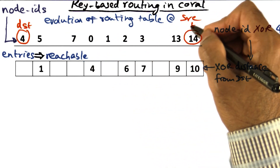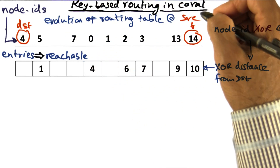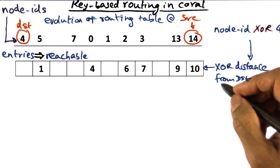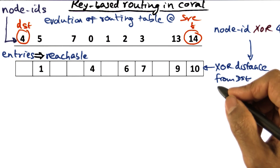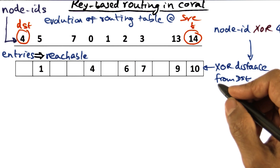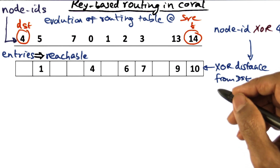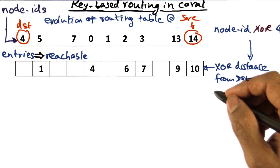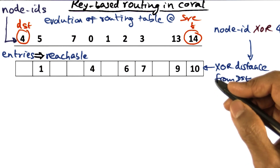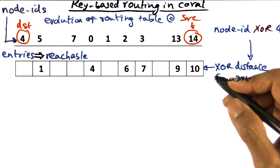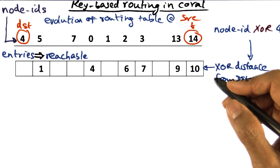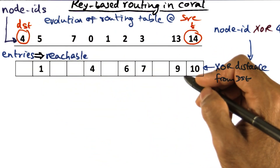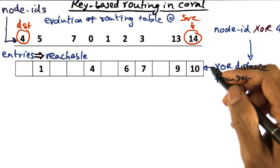We look at the evolution of the routing table at the source using Coral's approach to key-based routing, where in every step we are going half the distance towards the desired destination. Reducing the distance by exactly half may not always be possible because we may not have a way to reach that particular node, so it is approximately half. Let's run through this example to illustrate how this key-based routing works.